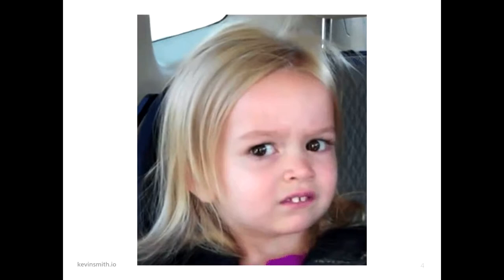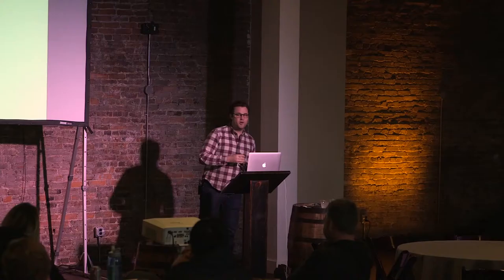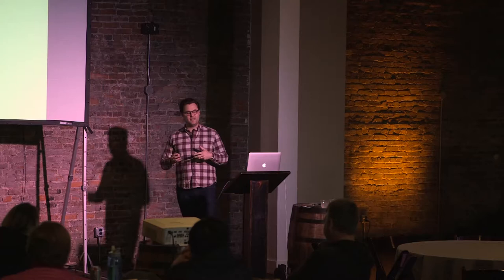When this sort of thing happens, it's like, what is going on? How can I fix this? The Japanese actually have a great word for this: mojibake. It literally means 'character transformation.' And it's what happens when text is decoded with a different character set than it was originally encoded with.